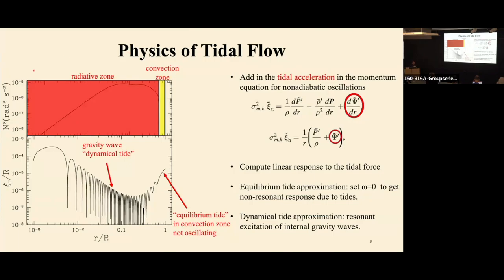Looking at the real stellar structure — using a one-solar-mass star as an example — the interior is dominated by a radiative zone, and outside the star has a convective envelope. The bottom panel shows wave amplitude as a function of fractional radius. In the stellar radiative zone, the solution has a very oscillatory feature — this is the dynamical tide. Near the surface region, the solution is dominated by the equilibrium tide, with no oscillatory feature. So there is a clear difference between these two types of tides.